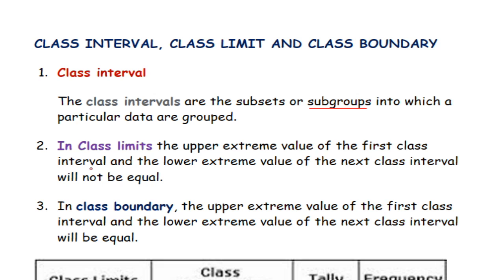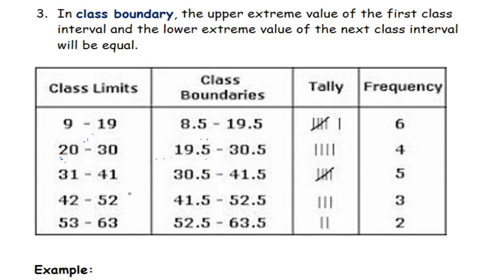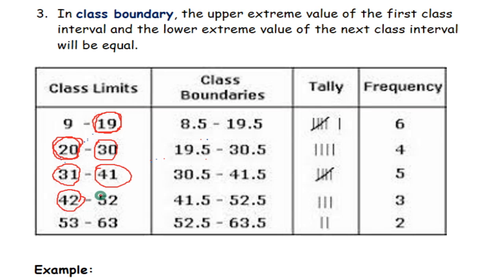Let's look at the meaning of class limits. In class limits, the upper extreme value of the first class interval and the lower extreme value of the next class interval will not be equal. The value that ends a class interval is not always the same as the value that begins the next class interval. For example, 19 ends the class interval here but 20 begins the next one — they are different. Similarly, 30 ends but 31 begins, and 40 ends here but 42 begins the next.